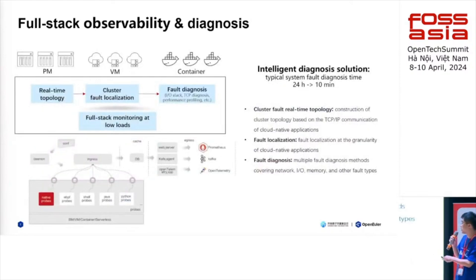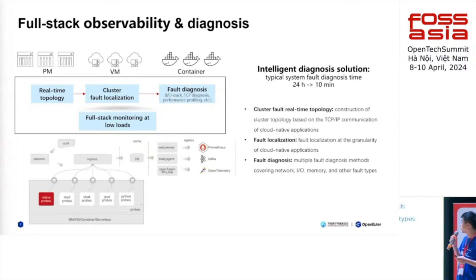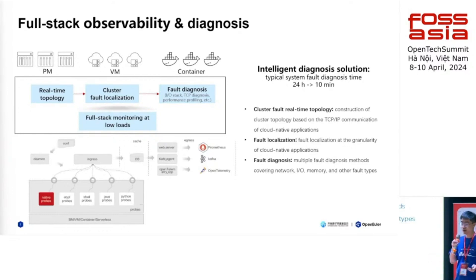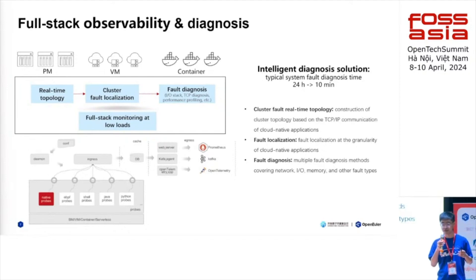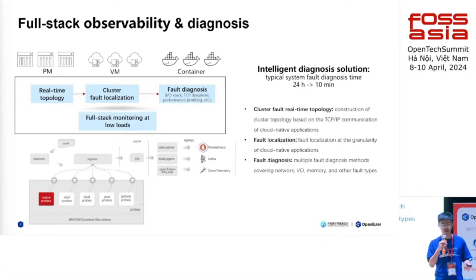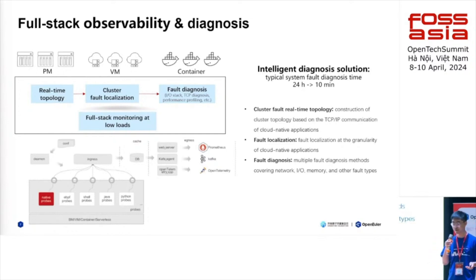When we get data from the probes, it can be stored as metrics in a database like Prometheus, or transferred via Kafka for other use. With the data we have, we can do many interesting things — like drawing a real-time topology based on TCP/IP communication data. With the topology, we can do cluster fault localization. Using data like response time or latency of requests, you can easily localize the fault and see which part of the cluster is wrong.